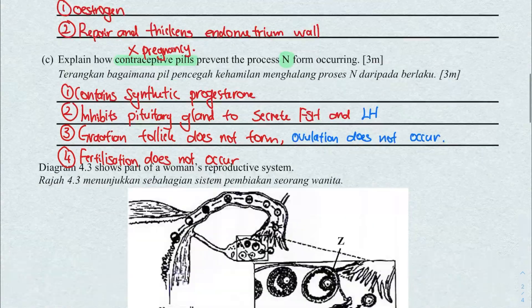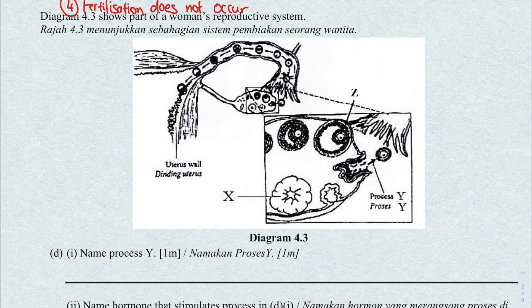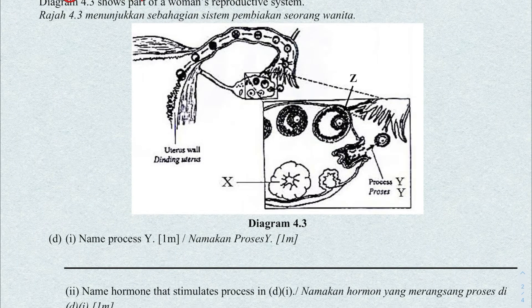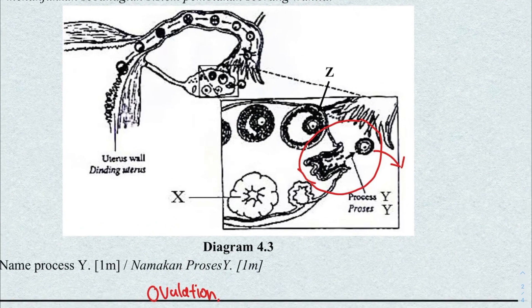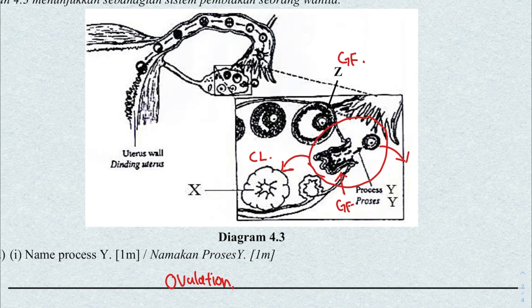The next question: we're now looking at a diagram of an ovary with oocytes and follicles. Name process Y. You can see the secondary oocyte being released out — so this is definitely ovulation. Let's do some labeling: process Y is ovulation because you can see the oocyte coming out. Structure Z is the Graafian follicle. After releasing the secondary oocyte, the Graafian follicle will become the corpus luteum.